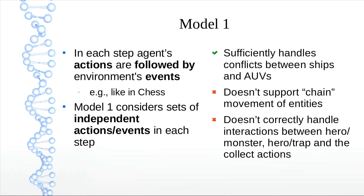Like in a chess game, we can model the agent-environment interaction such that actions of the agent are followed by events of the environment. We consider the set of independent actions and the set of independent events. This handles conflicts between ships and AUVs: the AUV moves in its turn and the ship in its turn can run over it.